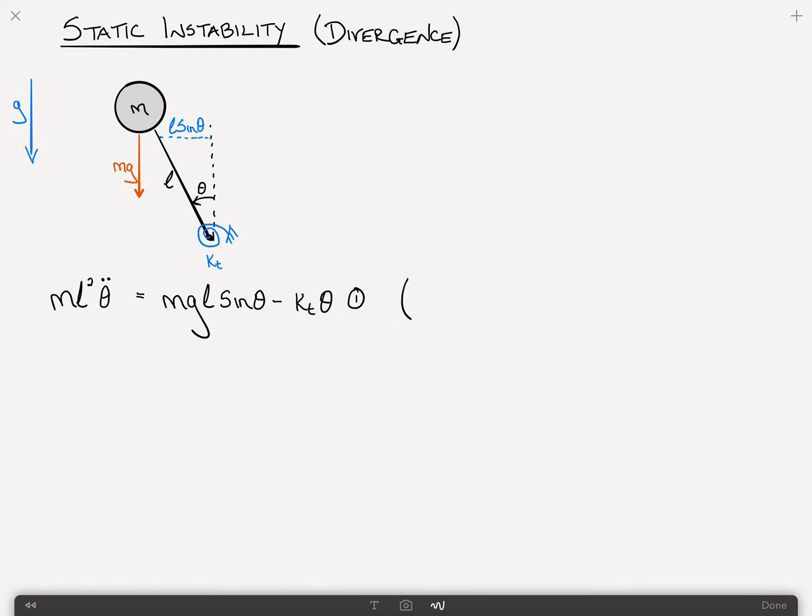Now, we'll call that equation one, but we can apply the small angle formula. So, let's just assume that theta is very, very small, much less than one. And this implies that sine theta is approximately equal to theta. So, I can rewrite this equation of motion as m l squared theta double dot, plus k t minus m g l times theta. And we'll call this equation number two.